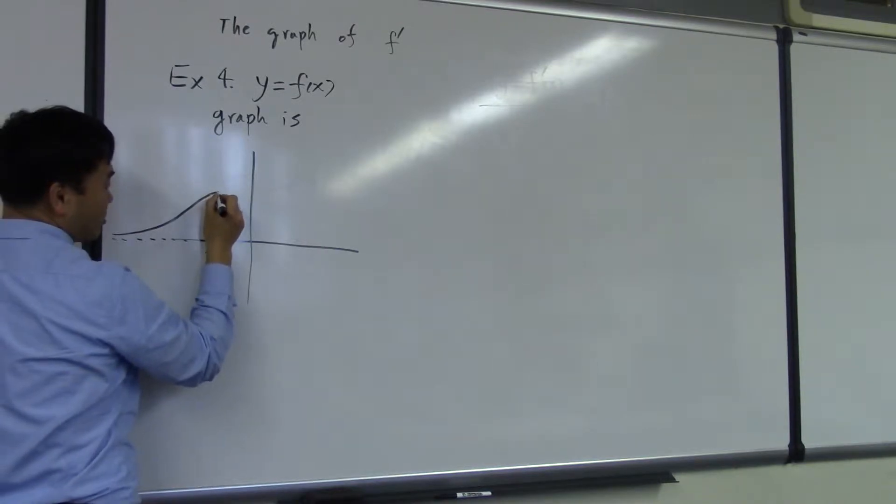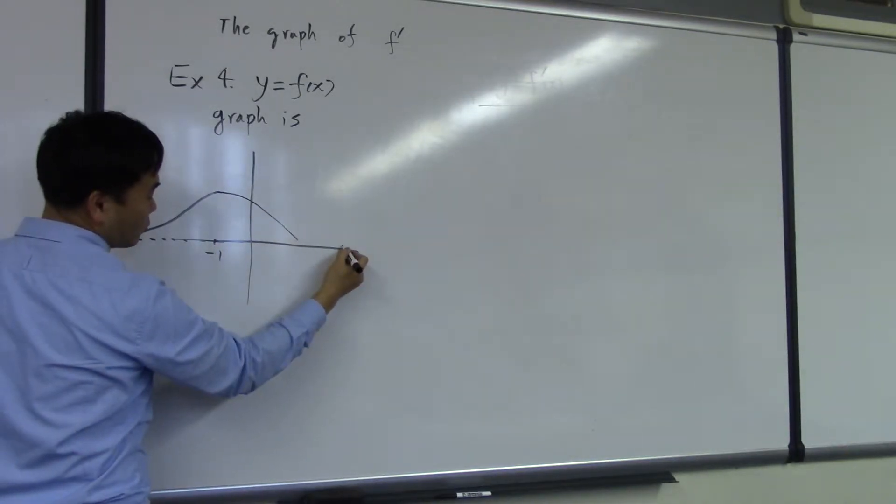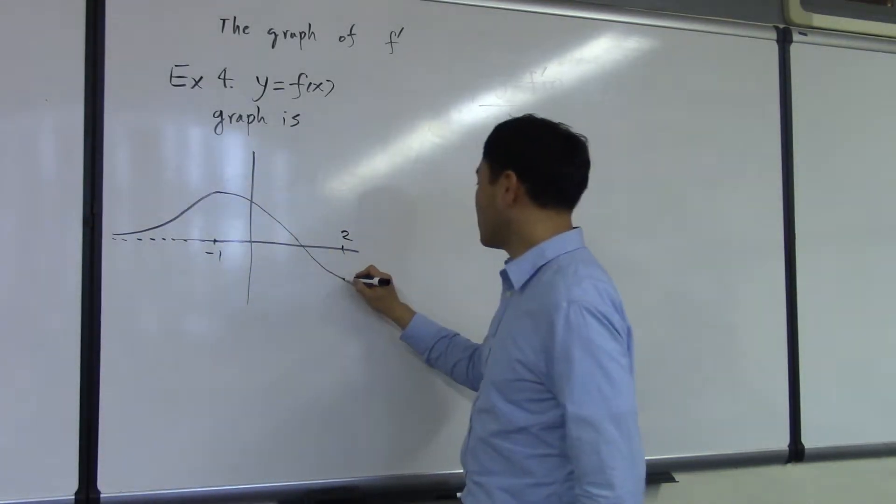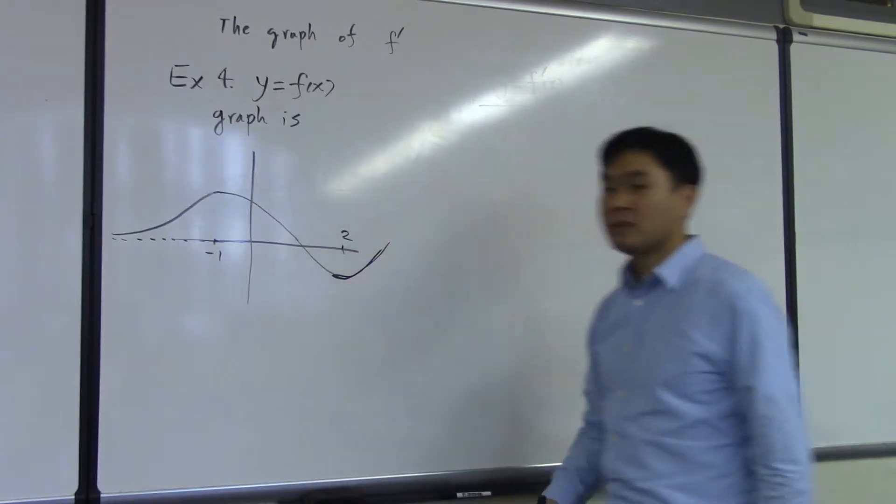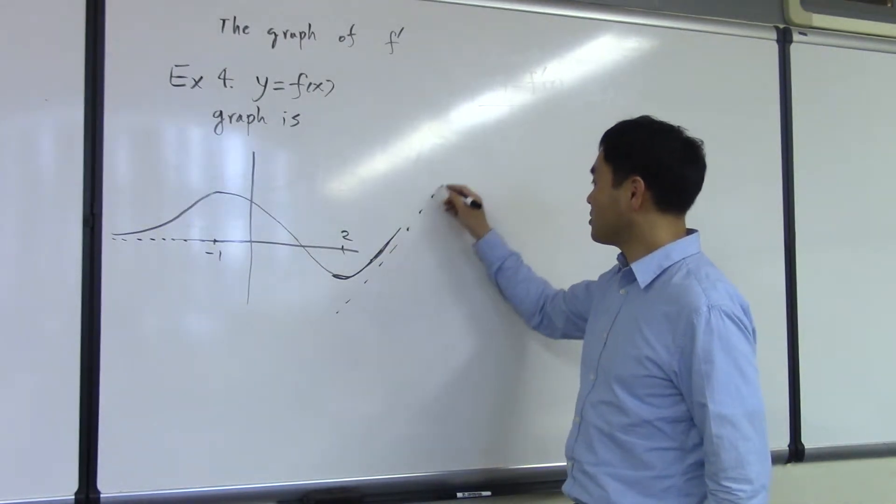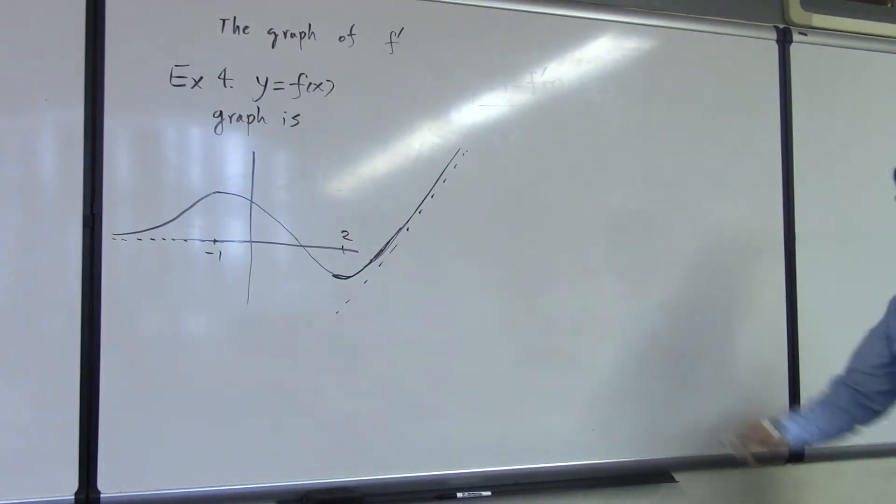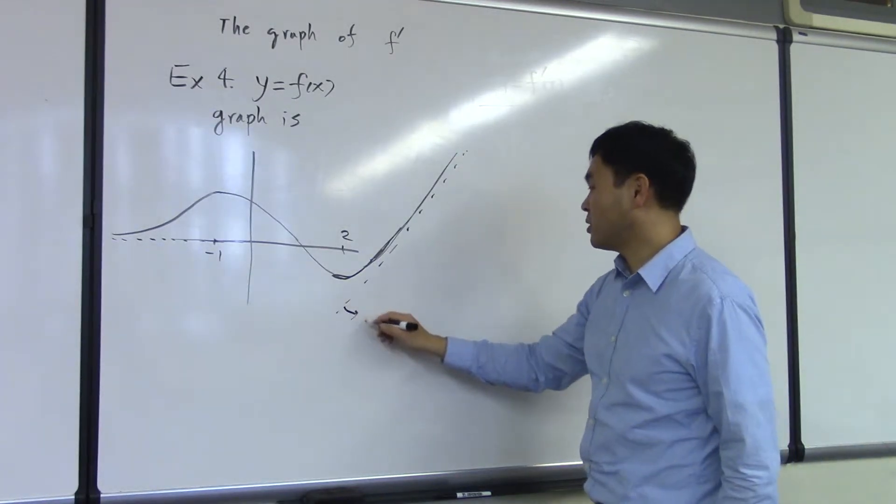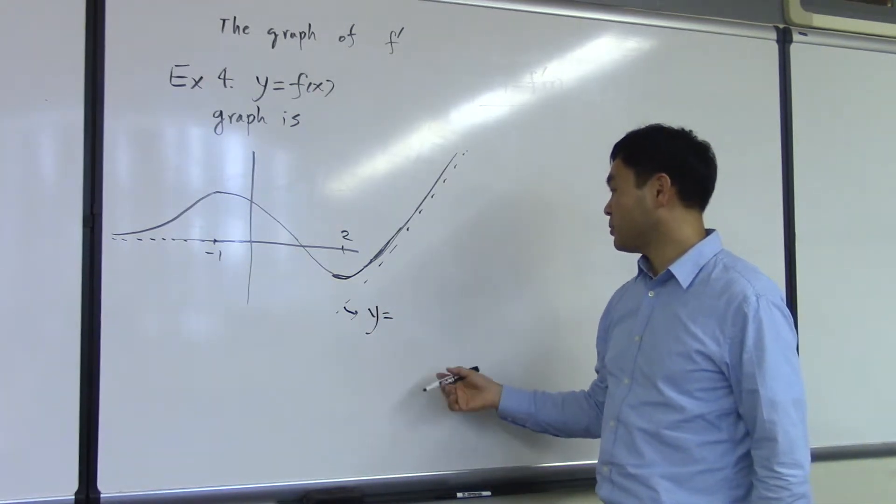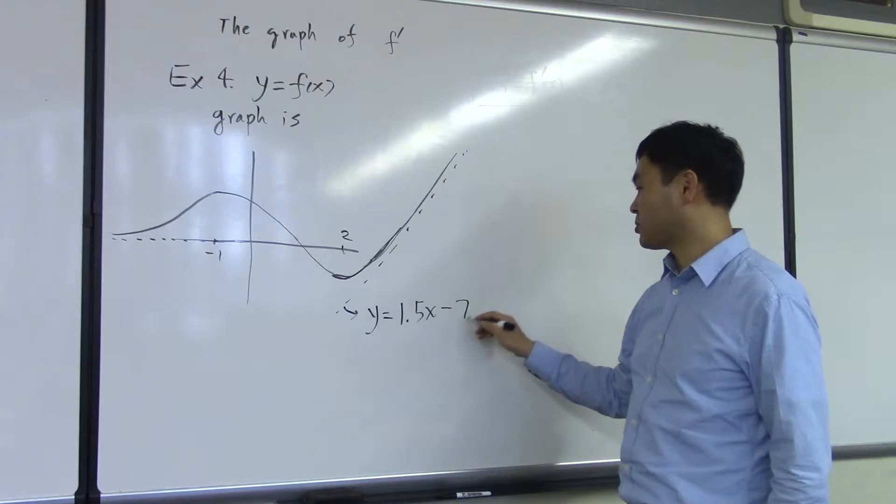At negative 1, it peaks and then comes down. And at 2, positive 2, it bottoms out and then goes up. And here, when it goes up, let's say the graph follows some slanted asymptote. And let's say the asymptote here has the equation y equals to, say, 1.5x minus 7 or something.